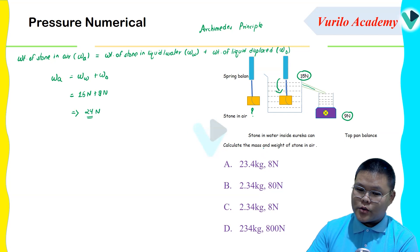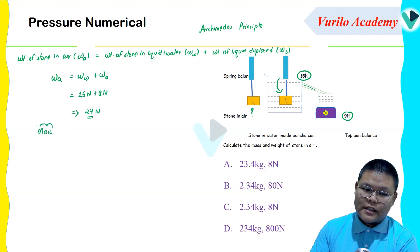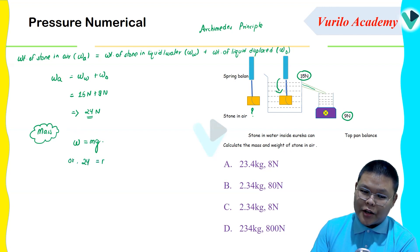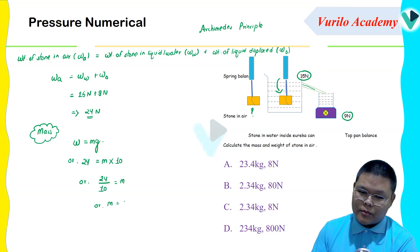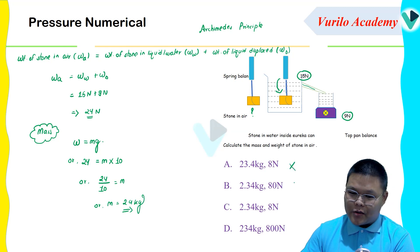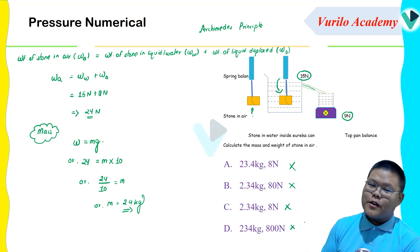So weight of stone in air is 24 Newton. Now calculate the mass. The formula is W equals mg, so 24 equals m into 10 — taking g approximately equal to 10 m/s². Therefore m is equal to 24 divided by 10, which gives m equal to 2.4 kg. So you can find the correct option.